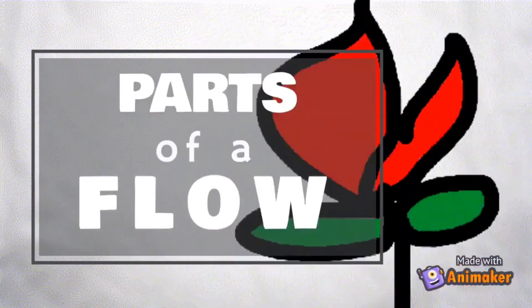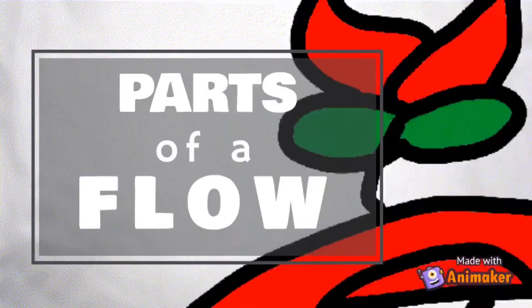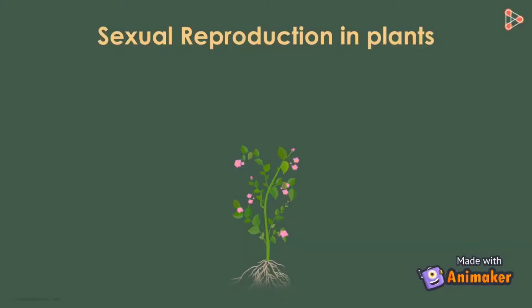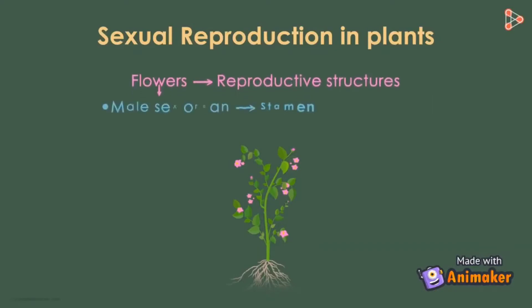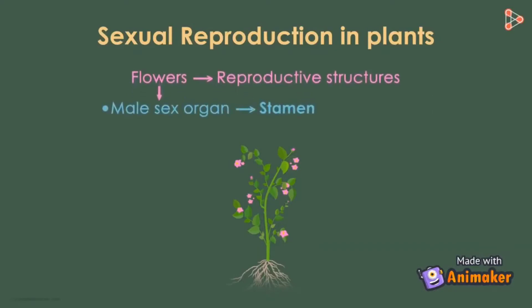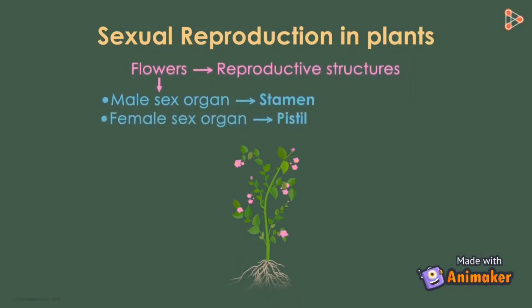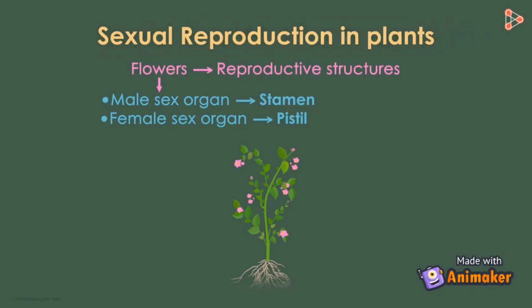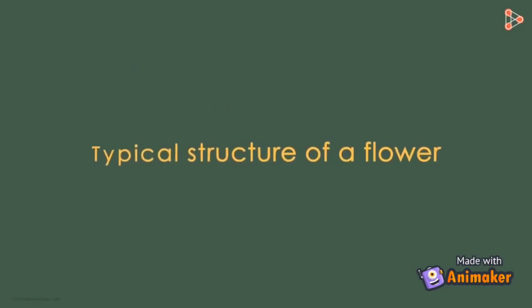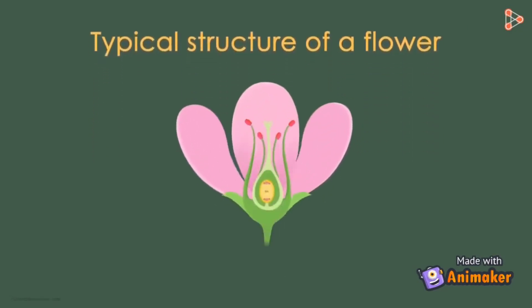Let's watch the video in order to understand the different parts and functions of a flower. Flowers are the reproductive structure of the plant. In a flower, the male sex organ is called the stamen and the female sex organ is called the pistil. But how does sexual reproduction occur? Let's understand it by looking at the typical structure of a flower.